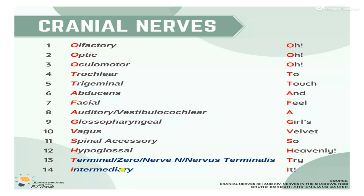The purpose of this lecture is to explain how to remember the cranial nerves. The best way is to memorize this mnemonic. The first O stands for Olfactory nerve. The next O is Optic nerve. Both start with O. The third O is Oculomotor nerve, which also starts with O.